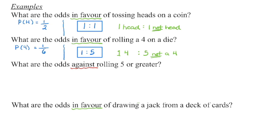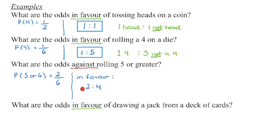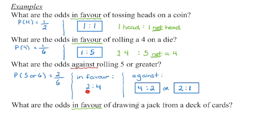Our next one asks for the odds against rolling a five or greater. I'm going to begin by finding the probability of rolling a five or greater. On a regular die, there are two possible numbers that are five or greater: five or six. So the probability is two out of six. Moving to odds in favor: there are two numbers that are five or greater, which means there are four numbers that are not. I'm then going to flip that to get the odds against. So there are four numbers that are not five or greater compared to two numbers that are. Odds against is unfavorable outcomes compared to favorable outcomes: four things we do not want, two things that we do want.